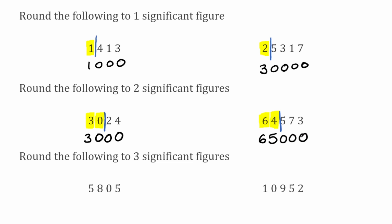For the last couple of questions we want to round to three significant figures. For the first question of 5,805: 5 is the first significant figure, 8 is the second, and 0 is the third. Our line goes between the 0 and the 5. Looking to the right we've got a 5, so we round up the previous digit — the 0 rounds up to a 1. On the left we have 5, 8, and then 1. We just need a placeholder of 0 in the units column. So 5,805 rounded to three significant figures is 5,810.